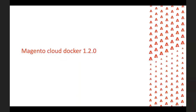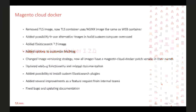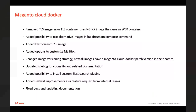The next significant part of our effort is Docker improvements. There are a lot of different changes. We removed TLS images and now the TLS container uses the Nginx image, the same as the web container. We added the possibility to use alternative images and build a custom compose command. We added Elasticsearch 7.9 as part of preparation for the release of 2.4.2. We added options to customize Mailhog, changed the image versioning strategy so all images now have a Magento Cloud Docker patch version in their names, updated Xdebug functionality and related documentation, and added the possibility to install custom Elasticsearch plugins.